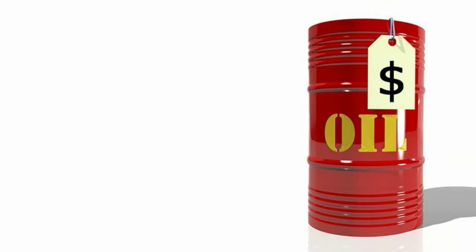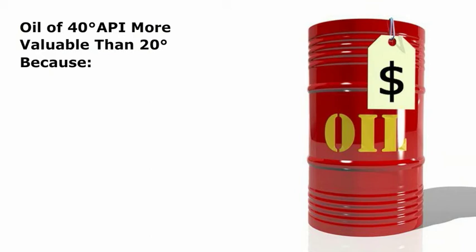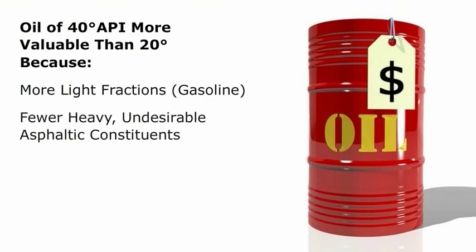For example, among crude oils from a particular area, an oil of 40 degree API (specific gravity equaling 0.825) is usually more valuable than one of 20 degree API (specific gravity equaling 0.934) because it contains more light fractions, for example gasoline, and fewer heavy undesirable asphaltic constituents.